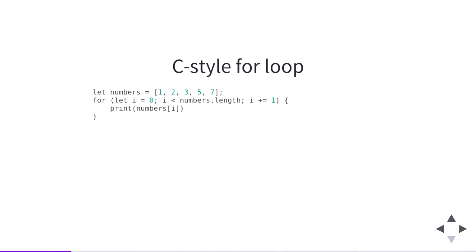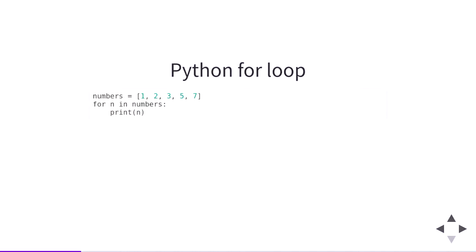This is JavaScript. This is a traditional C-style for loop written in JavaScript. In this for loop, we set i to zero, we check whether i is less than the length of an array — which is basically like a list in Python — and we increment i by one each time as we loop. Once this condition is no longer true, we stop looping. So we end up printing out all of the numbers in this array.